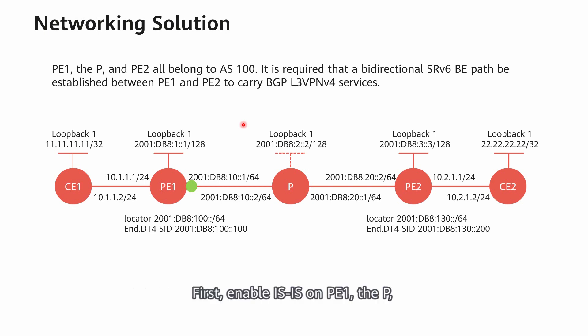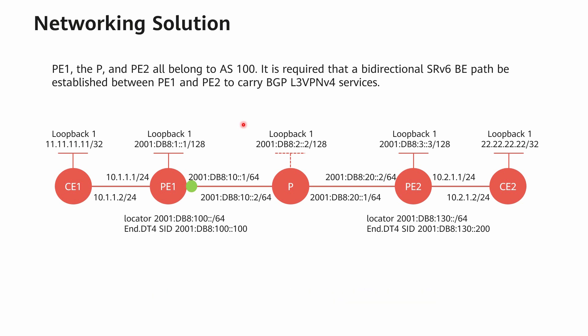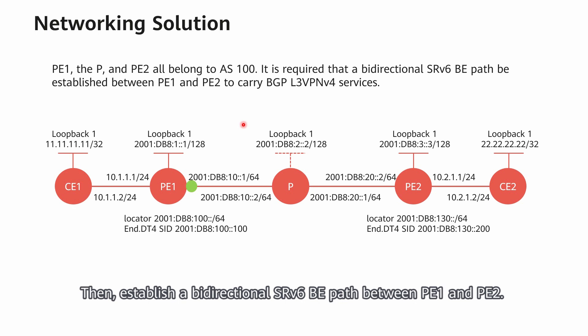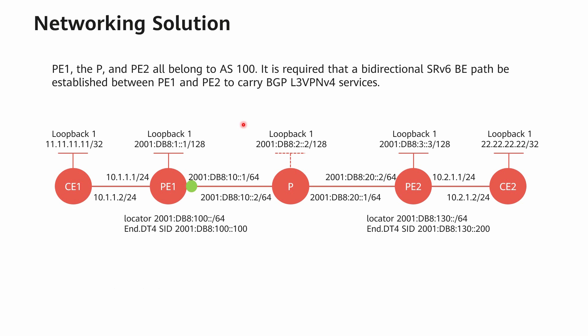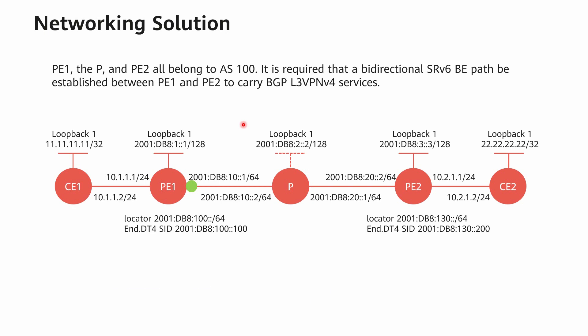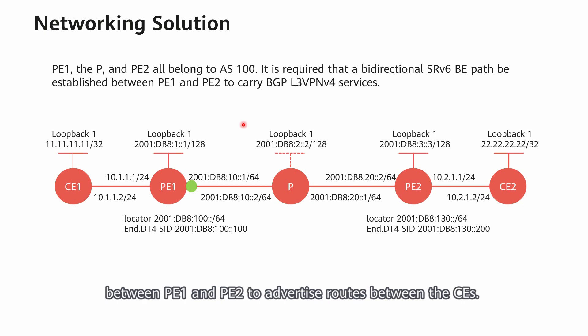The overall configuration process consists of three steps. First, enable IS-IS on PE1, the P, and PE2 to achieve basic route reachability. Then, establish a bidirectional SRV6 BE path between PE1 and PE2. Finally, configure VPN instances and CE access on PE1 and PE2, and establish a BGP VPN V4 peer relationship between PE1 and PE2 to advertise routes between the CEs.